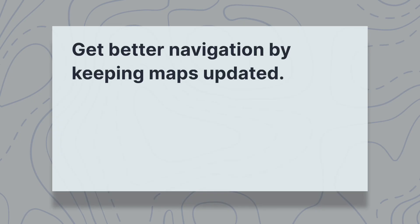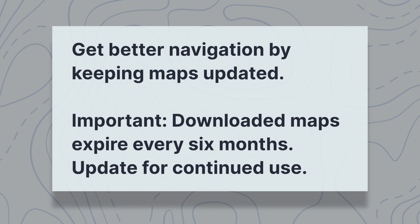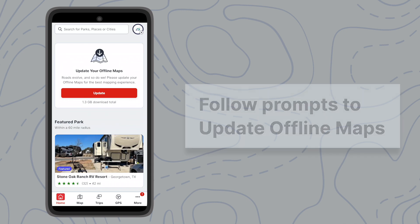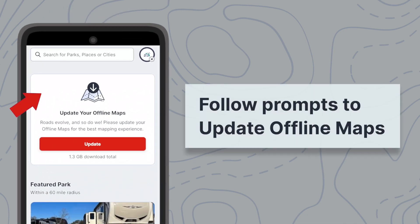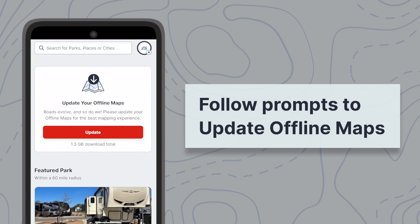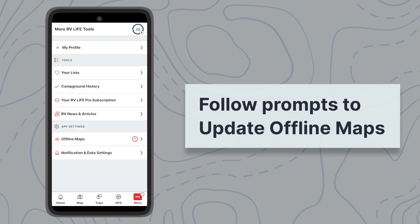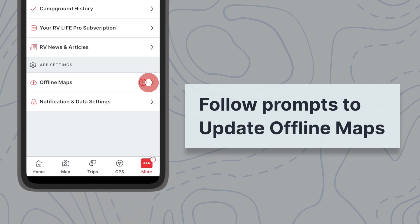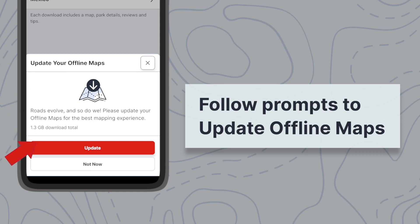Keeping your maps up-to-date ensures more accurate navigation and fewer hassles by showing you the latest road networks, new construction, and closures. Also note that stored maps expire every six months, so you must update your downloaded maps before or upon expiration for continued use. If you have maps that need to be updated, the RV Life app will give you a reminder to do so, both on your home screen and when tapping on the Offline Maps menu. Just tap on Update when prompted.